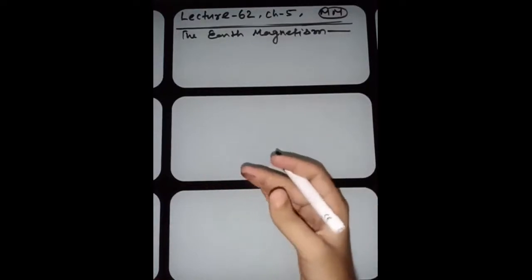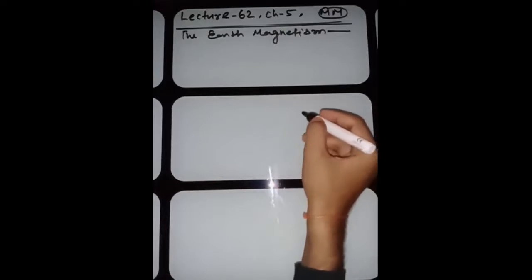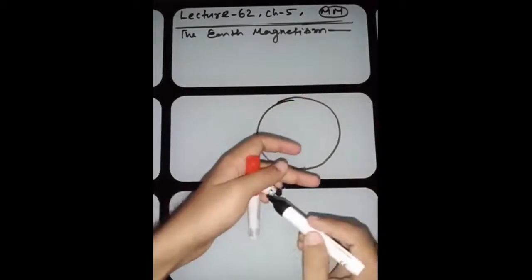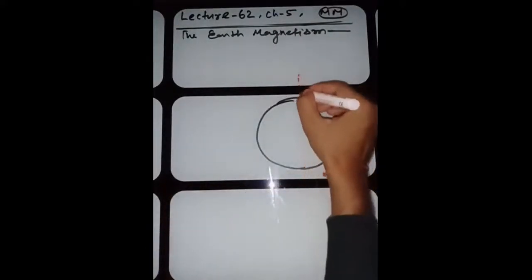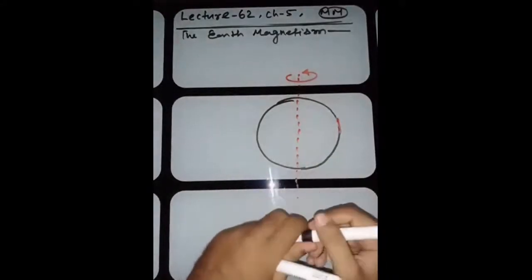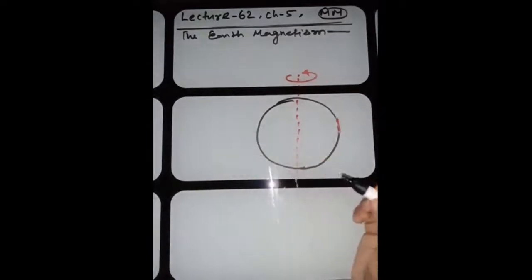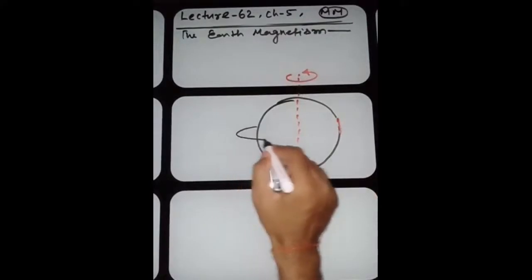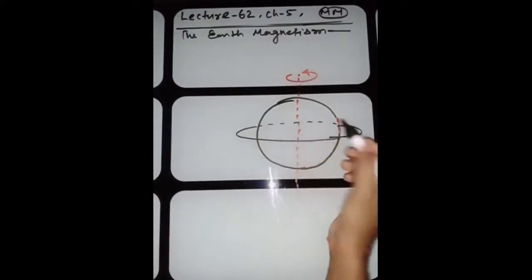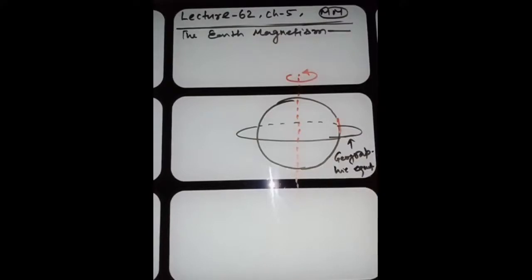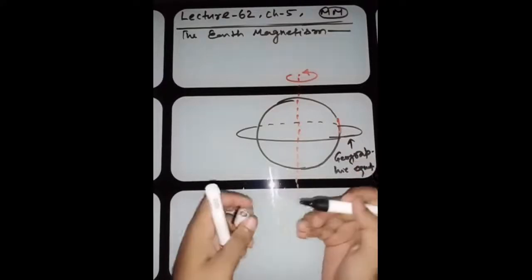Let us understand these quantities with a diagram. This is the earth, and this is the axis of rotation. The geographic equator is the plane you get when you cut the earth horizontally. When a bar magnet is brought toward the earth's surface, it bends and aligns at a certain angle.